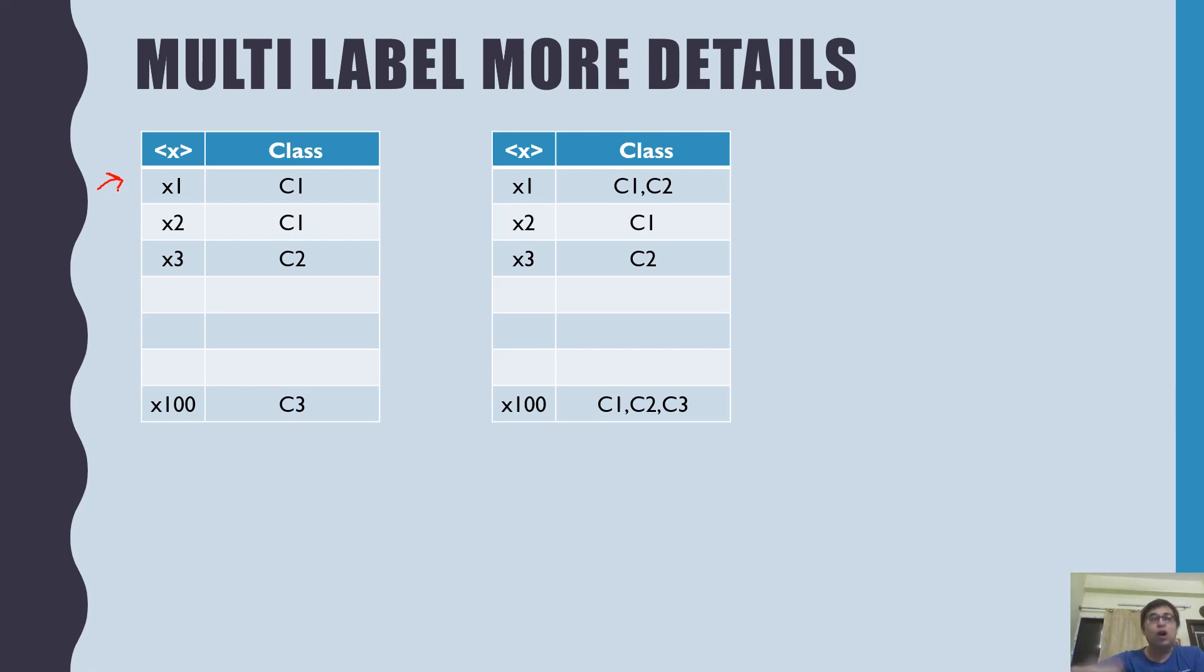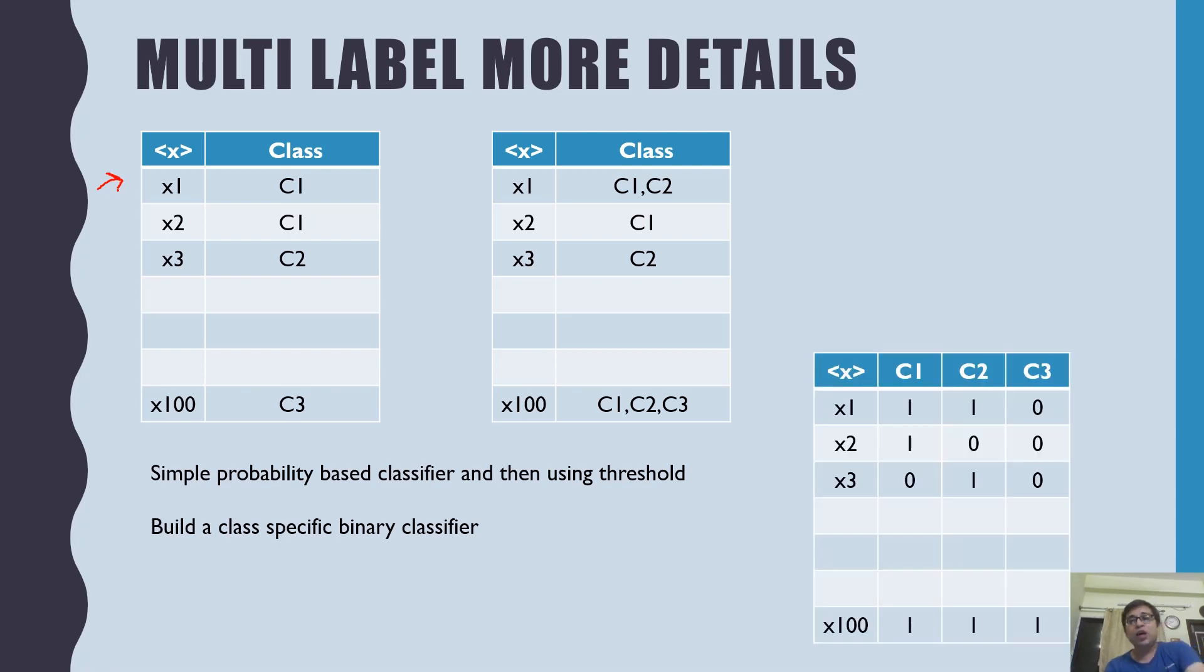You can use a probabilistic classifier and whenever the probability is beyond the threshold, you can put it into multiple classes. However, how do you train such classifier? For that, we have something called a class-specific binary classifier where we actually change or tweak the dataset a little bit. What we do is we actually create one extra column for one class. Here there are three classes, so what we have done is we have created three dummy variables.